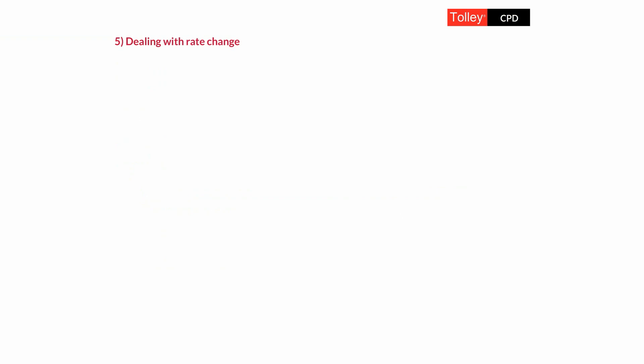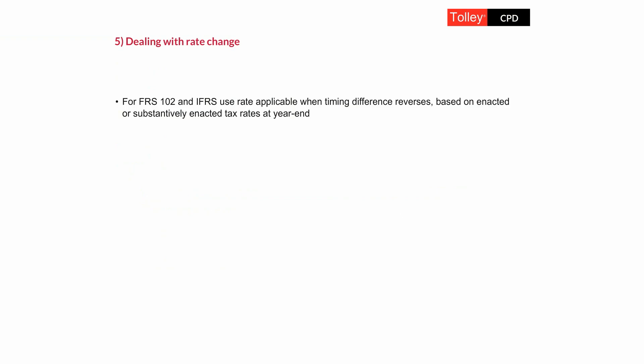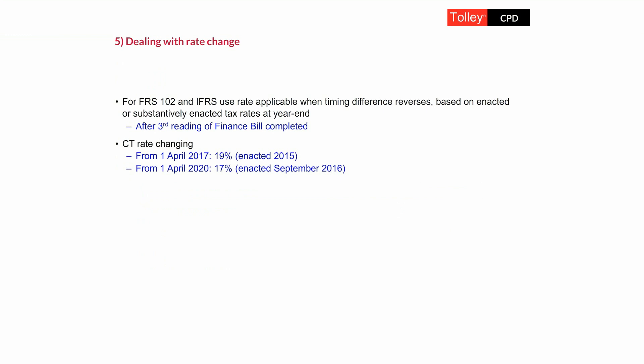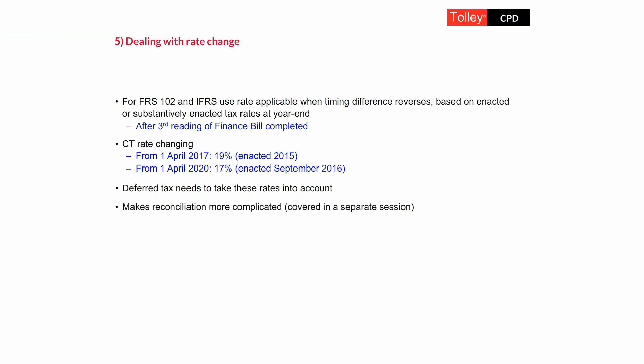Corporation tax rates are changing. From April 2020, the corporation tax rate should fall to 17%, which was enacted some time ago. For both FRS 102 and RFRS, we're told to use the tax rate applicable when the timing differences are expected to reverse, based on enacted or substantively enacted tax rates at the year end. In the UK, substantively enacted means after the third reading of the Finance Bill in the House of Commons. In other jurisdictions there is no such concept. When tax rates change, it affects the amount of deferred tax booked and therefore the effective rate — making a tax reconciliation more complex.